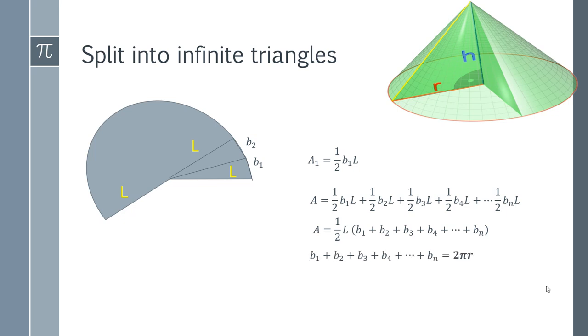that sum is actually 2π r. And I'll show you why. The circumference of that bottom circle is going to be 2π r. So if you add up B₁, B₂ going right around that shape all the way around, that's going to sum up to the circumference. And so that's where we get 2π r from.